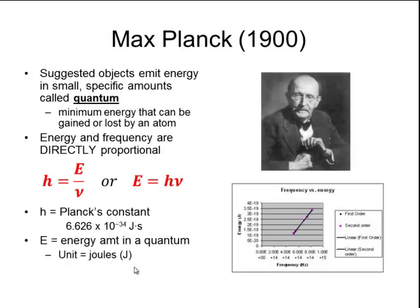He also stated that energy and frequency are directly proportional. So in this equation here, E for energy is divided by the symbol for frequency, nu. Whenever two variables are divided and they get a constant answer every single time, that indicates that they are directly proportional. And when we graph that, we should get a diagonal line. So you see here that as the frequency goes up, the amount of energy goes up as well.